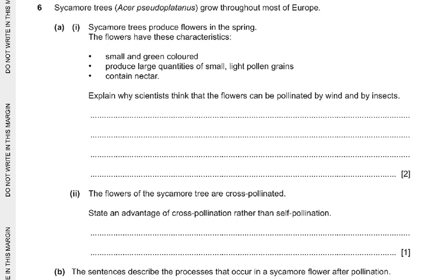Question number 6: sycamore trees — Acer Pseudoplatanus — grow throughout most of Europe. Sycamore trees produce flowers in the spring with these characteristics: small and green colored, produce large quantities of small light pollen grains, and contain nectar. Scientists think the flowers can be pollinated by wind and by insects. Small and green colored is a characteristic of wind pollination — they do not need to attract insects. Large amounts of pollen increase the chance of wind pollination, but the fact that they contain nectar would attract insects.